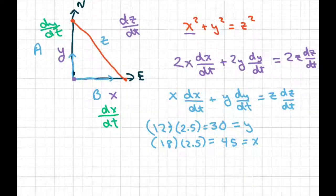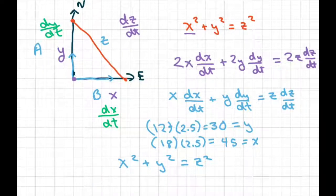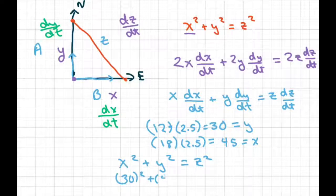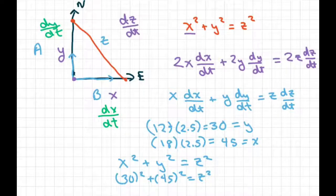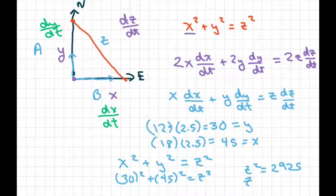So, plugging in for your X, we know that we're going to get X squared plus Y squared equals Z squared. And what we're going to get with that is 30 squared plus 45 squared equals Z squared. And that's going to end up being Z squared equals 2925. So Z is going to be approximately 54.08.